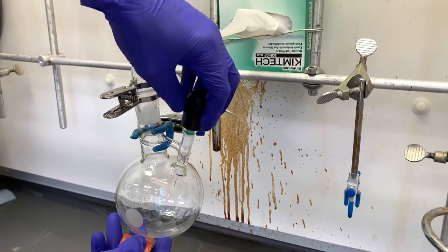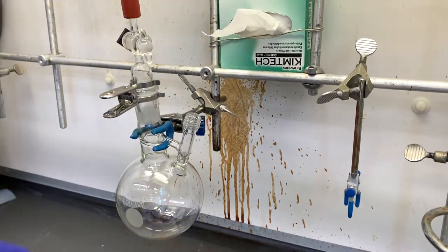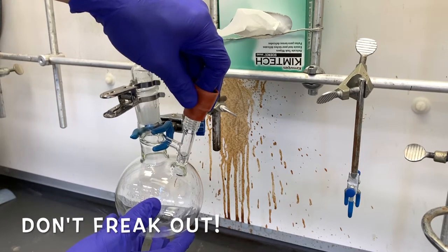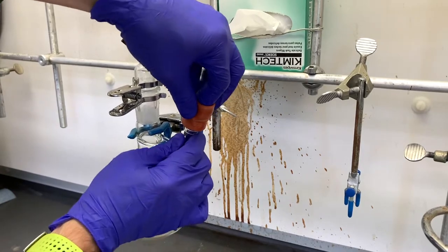At this point, you need to remove the Teflon stopper under flowing nitrogen gas and replace it with a rubber septum. This can be a pain in the butt, but be calm and persistent and don't freak out. As long as nitrogen is flowing out of the flask, your flask is safe from oxygen and water getting inside.